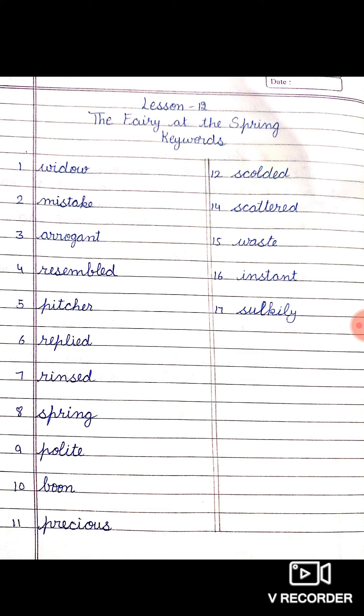Instant means immediately or at that moment. The mother said, 'I tell you that you are to go, and go instantly,' meaning go immediately. Sulkily means annoyed and keeping silent. The girl went off sulkily, taking with her the best silver flagon in the house.